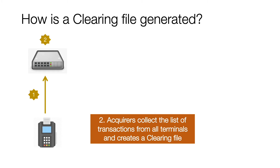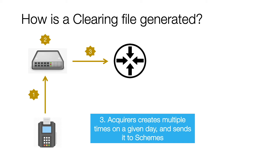The next step is that acquirers collect the set of transactions from all the merchants and terminals and create a clearing file to be submitted to the schemes. Acquirers can submit multiple clearing files on a given day depending on the cycles they have agreed upon with the schemes.